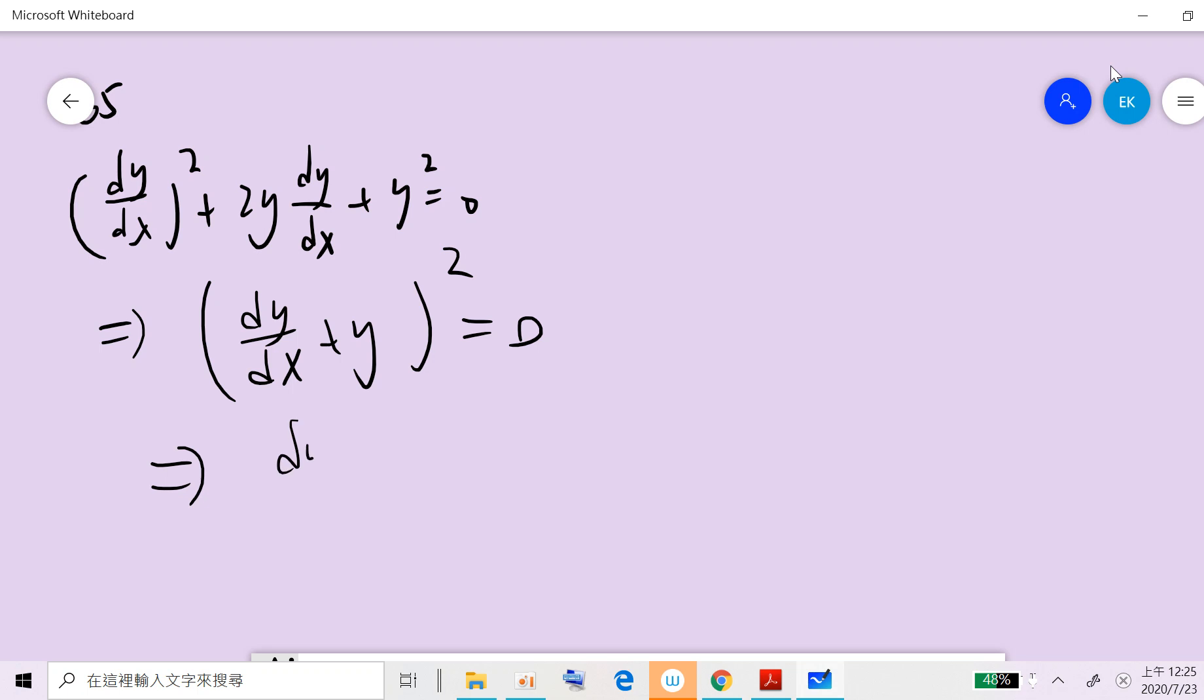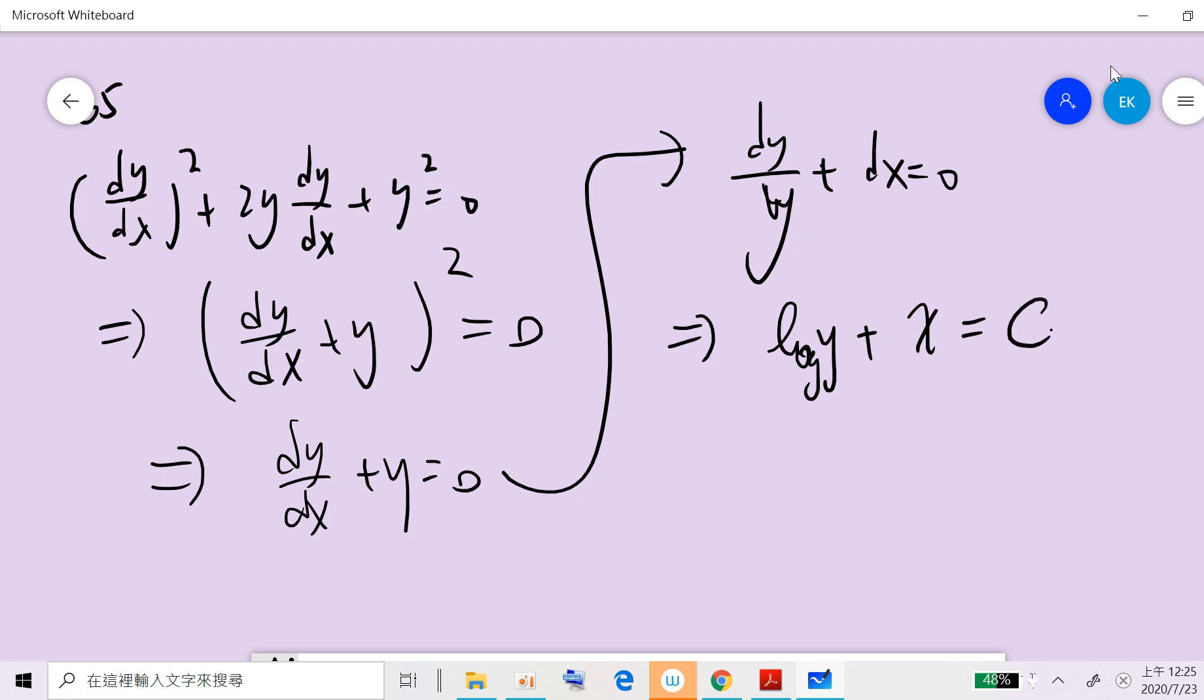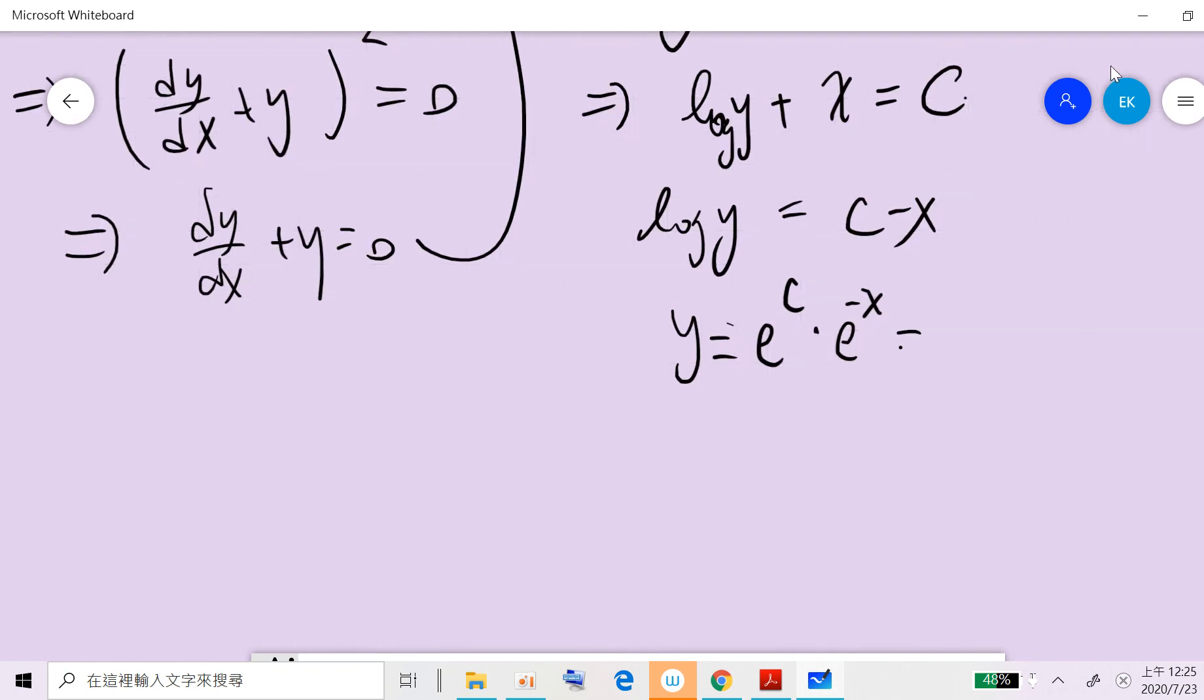dy/dx plus y equals zero. So dy/y plus dx equals zero. We can integrate both sides: log y plus x equals C. So log y equals C minus x. y equals e^C times e^(-x). This is some constant times e^(-x).